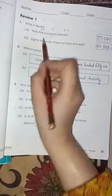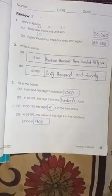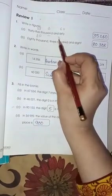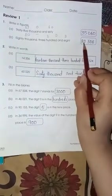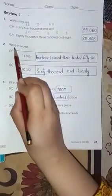Now, 80,000 we are going to write here as 80. Then 308. We don't have any number in the tens place here, so we are going to write 0. As you can see, 80,308.